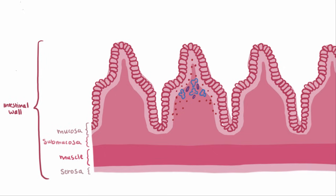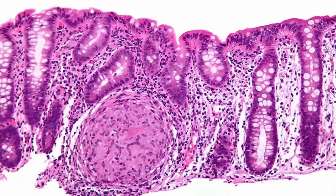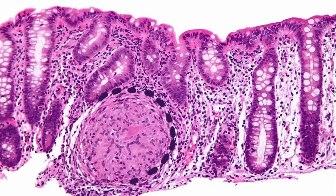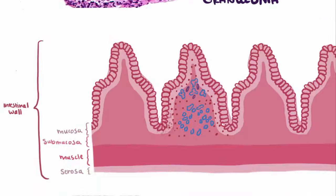As cells become more inflamed and are destroyed, the immune system invades down into the deep mucosa and organizes itself into granulomas. Granulomas are big masses of immune cells that are trying to encapsulate whatever they think is foreign.